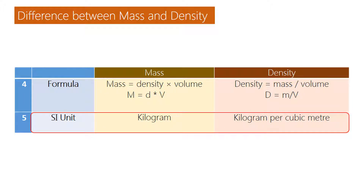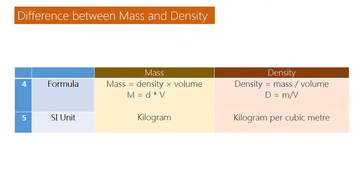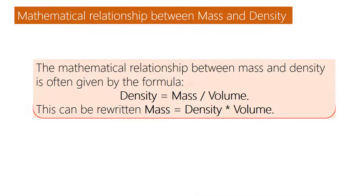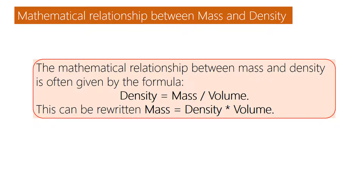SI unit of density: kilogram per cubic meter. The mathematical relationship between mass and density is given by the formula: density equals mass divided by volume, which can also be written as mass equals density multiplied by volume.